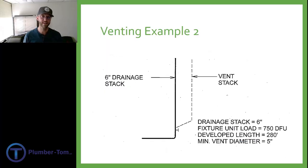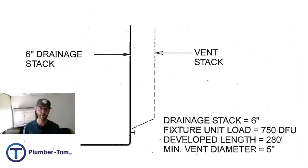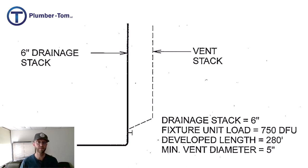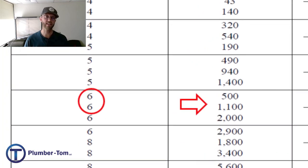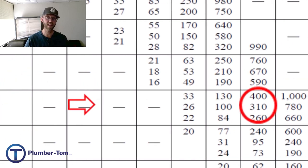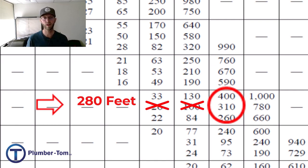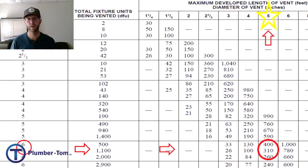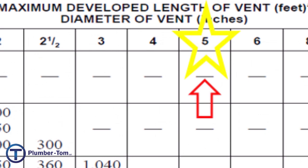Example two: we're dealing with a vent stack. The drainage stack is six inch, the total fixture unit load is 750 drainage fixture units, and the developed length is 280 feet. Going to the table, we find the six inch rows. 750 DFUs is more than 500 but less than 1100, so we settle in that row. Our developed length of 280 feet is more than 26, more than 100, but less than 310 — so we take that column and head straight up to the top. We find that we have a five inch vent pipe for that vent stack.